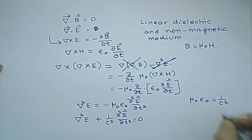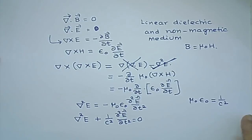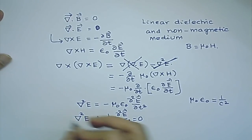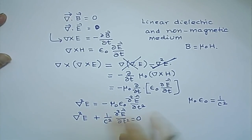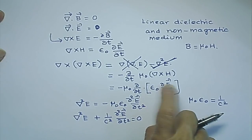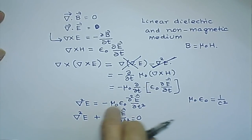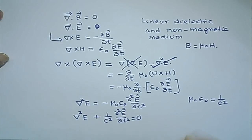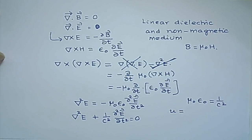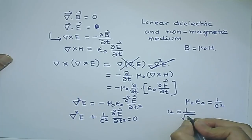I am left with del squared E equals minus mu_0 epsilon_0 d squared E/dt squared, which is nothing but a wave equation: del squared E plus (1/c squared) d squared E/dt squared equals zero, since mu_0 epsilon_0 equals 1/c squared. If I had a linear dielectric with permittivity epsilon, I would bring in a dielectric constant, giving the speed of the electromagnetic wave in the medium as 1 over the square root of mu times epsilon.